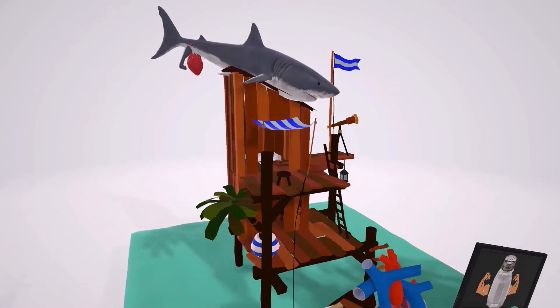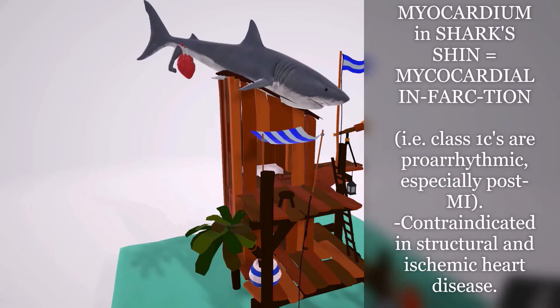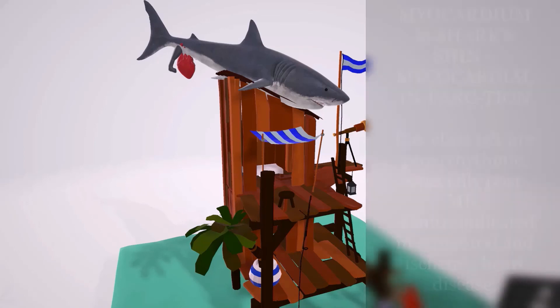And this brings us to our adverse effects. Behind over here we see this shark over here who's stuck. This shark actually has a heart. We'll call the myocardium by his shin. He has myocardium by his shins. I don't know why he has shins, he's a shark, but this is the myocardium in the shark's shin. Myocardium in the shark's shin reminds us of myocardial infarction. Class 1C anti-arrhythmics should not be used after a myocardial infarction because they're proarrhythmic.